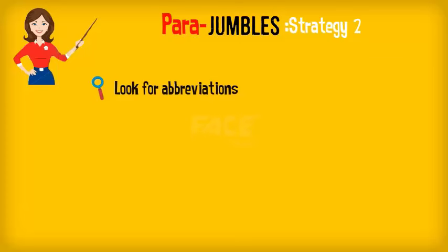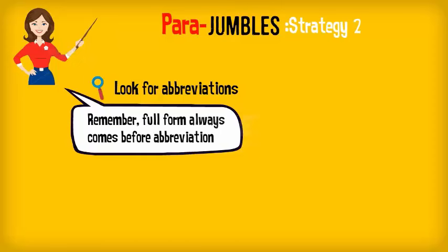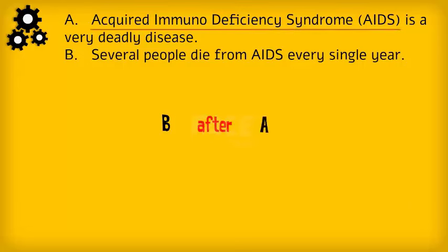The third method is to look for abbreviations. Whenever sentences contain full forms and abbreviations, the sentence containing the full form will come before the ones containing the abbreviation. In this para-jumble, sentence B will come only after A because A is where the full form is provided.